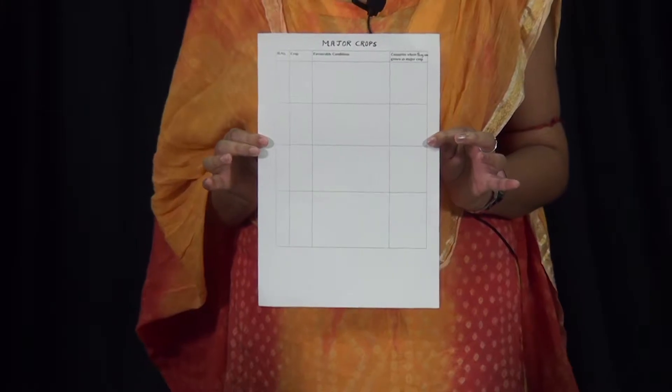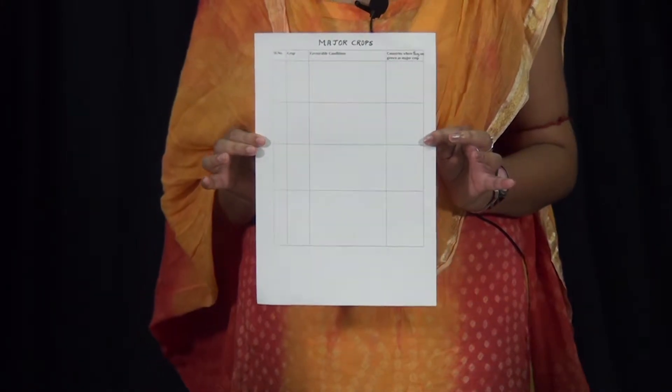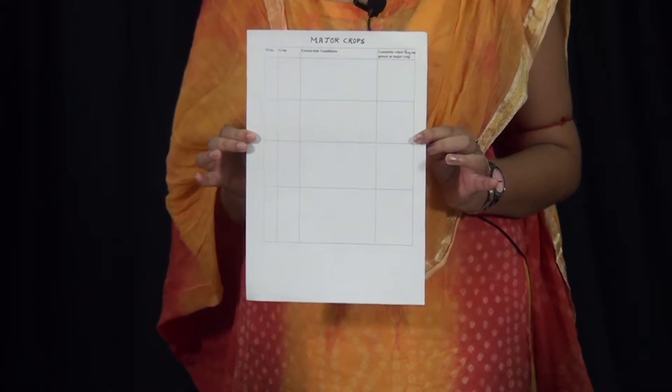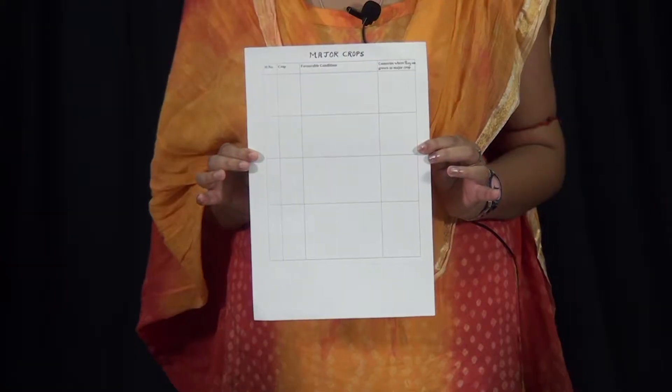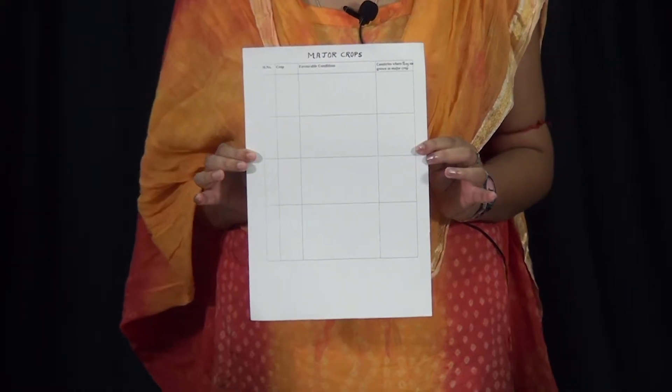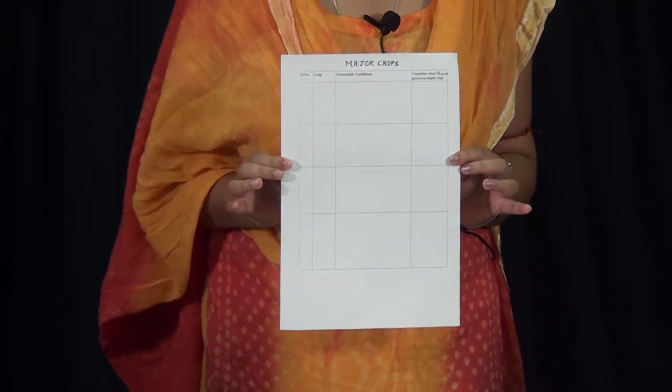The column headings, as read by students, are: serial number, crop, favorable conditions, and countries where they are grown as a major crop.